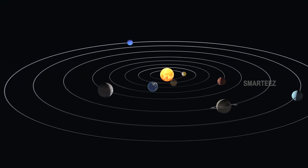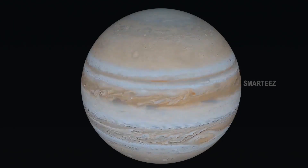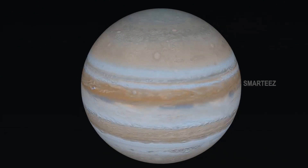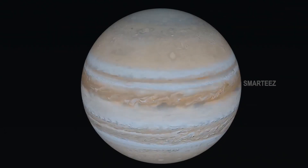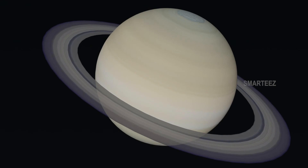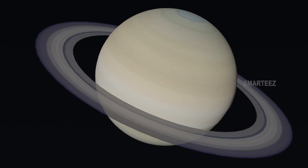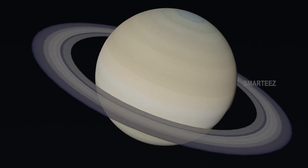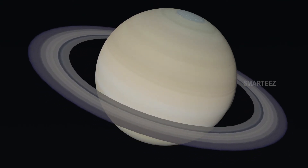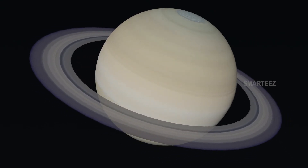The fifth planet in the solar system is Jupiter. This is the largest planet in our solar system — it's more than a thousand times bigger than the Earth. That's the largest planet Jupiter. The sixth planet in the solar system is Saturn. This is the second largest planet. Saturn is known for its rings. These rings are made up of chunks of ice and rock, and the rocks can be as big as a small hill on Earth. That's Saturn, the planet with its spectacular rings.